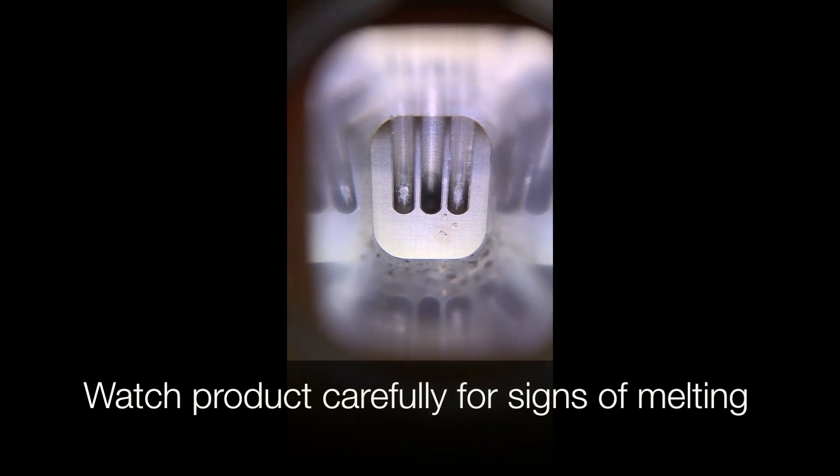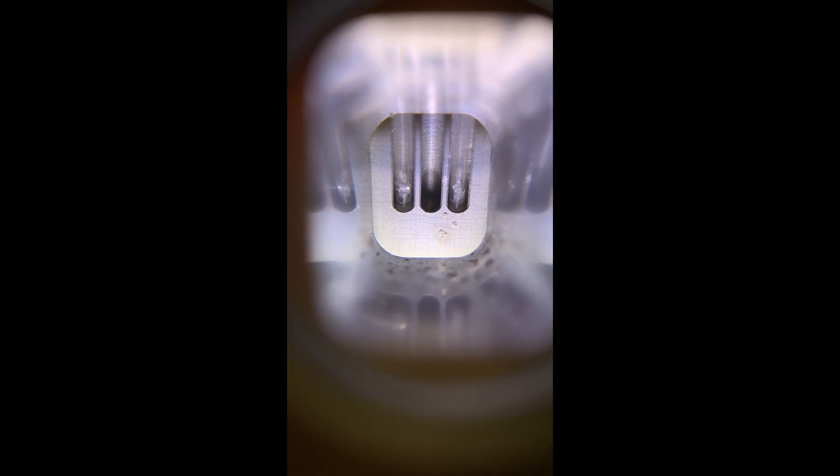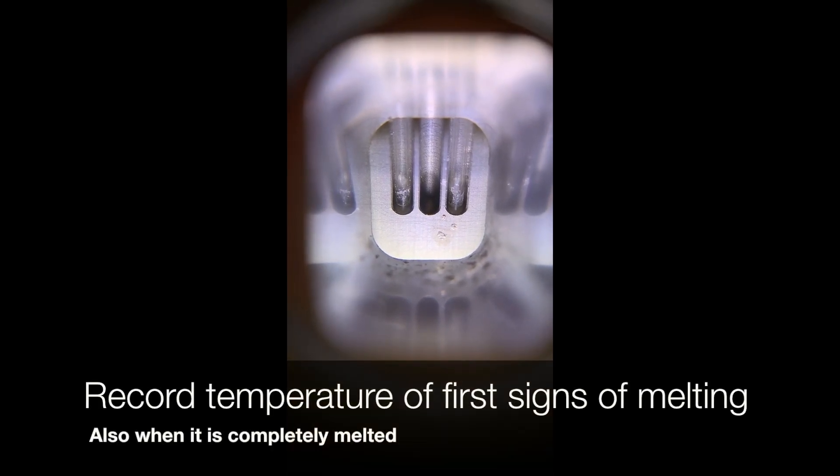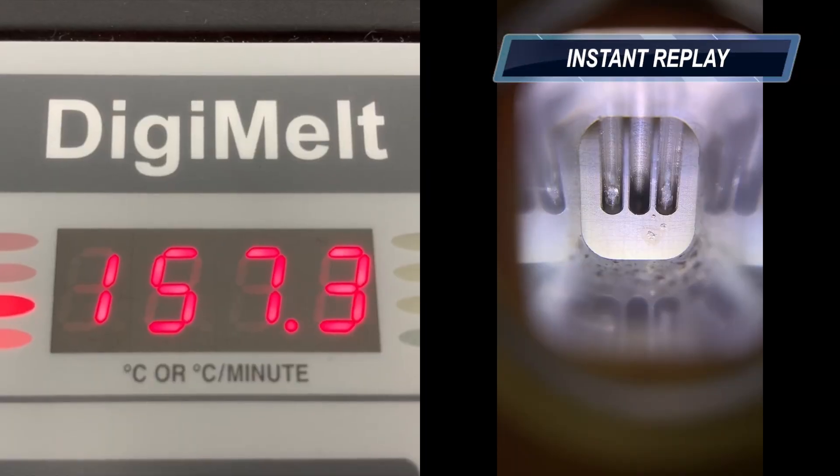Watch your sample carefully for signs of melting. Signs of melting include bubbling and collapsing in on itself. When you see the first signs of melting, record the temperature because you don't want to forget it.